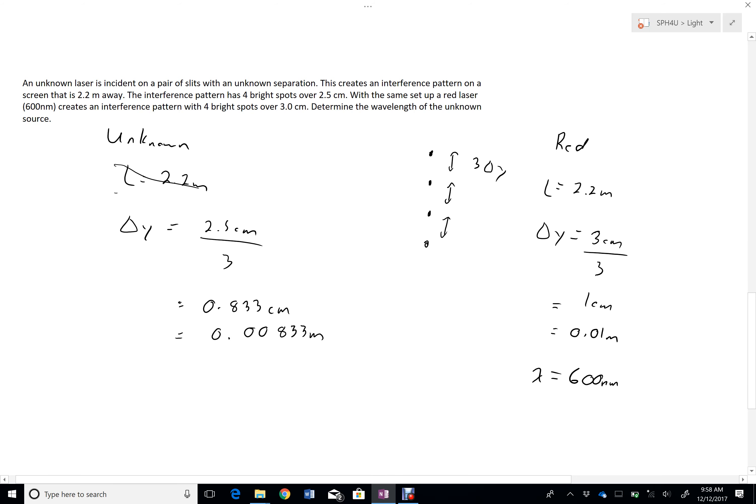For our purposes, in doing it this way, we're not going to bother with this L. And we're just going to look at the relationship between delta Y and the wavelength. It's said that we keep everything with the setup the same. So, delta Y is directly proportional to lambda, according to our equation. Delta Y equals lambda L over D, so they're directly proportional to each other.